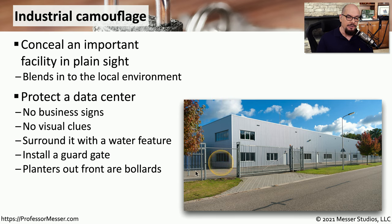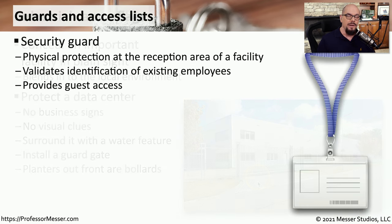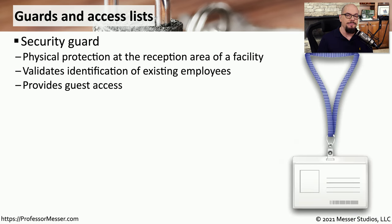I've visited data centers that have water features around them to prevent people from gaining access, and they might have a guard gate in front to prevent someone from driving in. If you look at a data center like this, you may even find that there are big planters in the front that are actually bollards — very large concrete devices that would prevent somebody from driving into or through the walls of that building. Although we can automate many aspects of security, one of the best physical security features we have are people, and we can put guards and access lists in front of a facility to have a human interaction with who might be coming in.